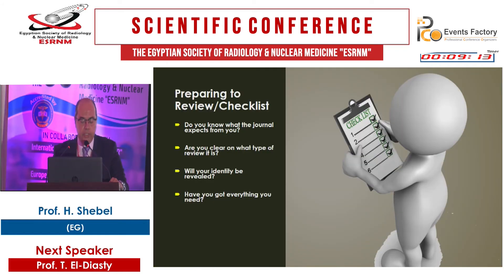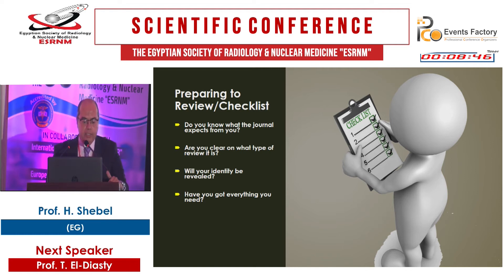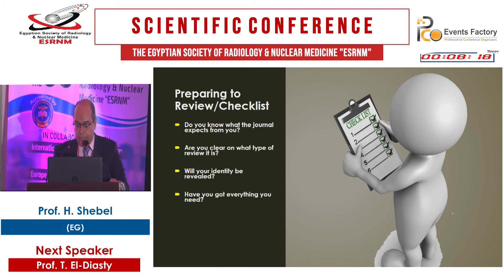Now let's shift to part two: how to read and how to write your comments. Before preparing the review after your acceptance, go through a simple checklist. Do you know what the journal expects from you? Some journals ask you to review only part of the article. Are you clear on what type of review it is — blind, single, double, or transparent? Will your comments be identified? And have you got everything you need, such as additional data or statistical results?